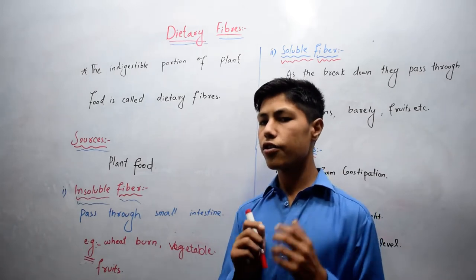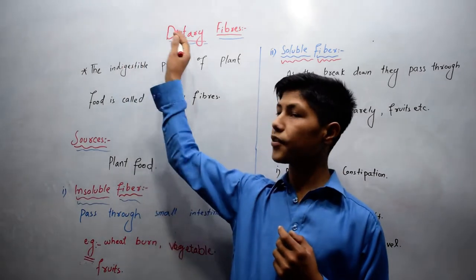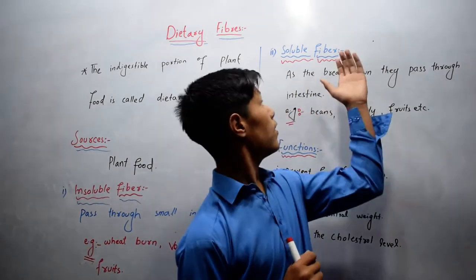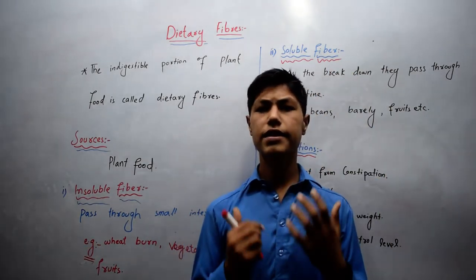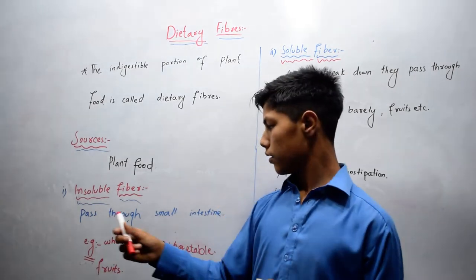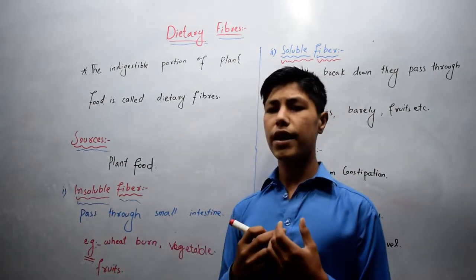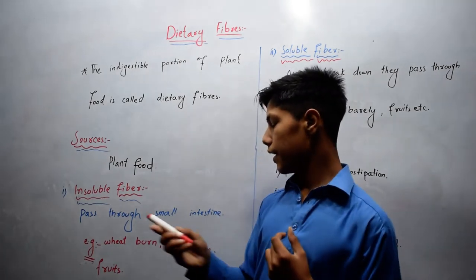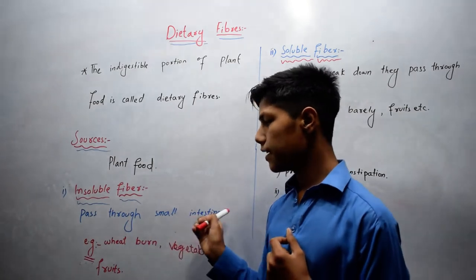Now there are two types of dietary fiber: insoluble fiber and soluble fiber. Let's start from the insoluble fiber. Insoluble fibers are those fibers which do not dissolve in water and pass through small intestine.